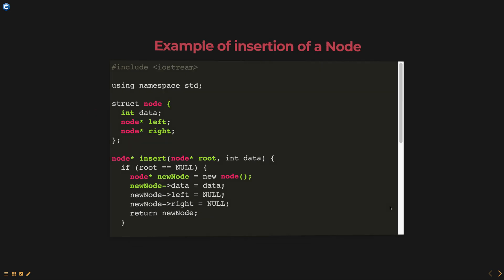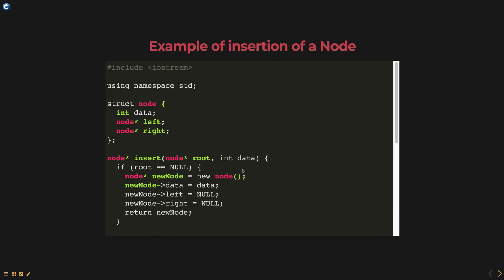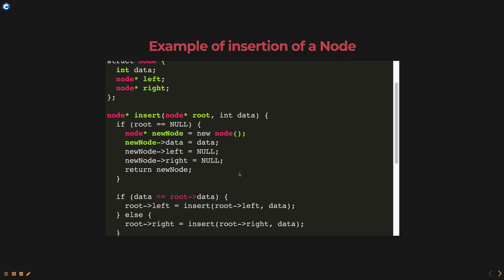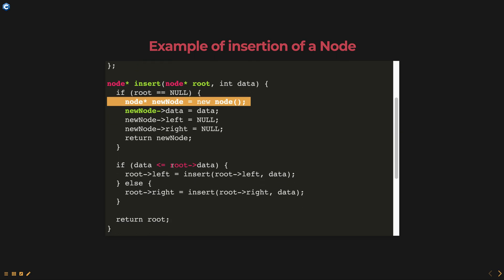Here is an example in C++. In this example, we have a function insert that takes in a binary tree and the data to be inserted. The function first checks if the tree is empty and creates a new node. If the tree is not empty, the function compares the value of the data to be inserted with the value of the root. If the value is less than the value of the root, it inserts the node in the left subtree, and if the value is greater, it inserts the node in the right subtree.